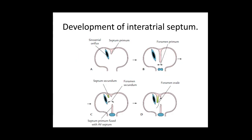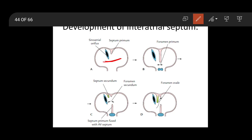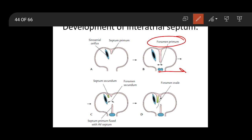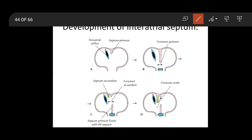Now, coming to the formation of the interatrial septum. Initially there is a common atrial chamber, and a septum arises from the roof of the primitive atrial chamber growing downwards toward the septum intermedium. This first-formed septum is called the septum primum. Before fusion of the septum primum with the septum intermedium, there is a gap between them — this gap is called the foramen primum, the first-formed foramen.